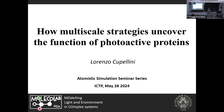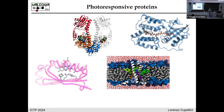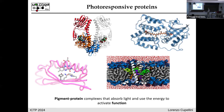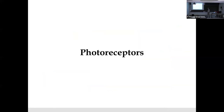Thank you for the introduction. I'm going to talk about photoactive proteins and how we can learn about them with multiscale strategies. Photoresponsive proteins are generally protein complexes with pigments — proteins containing a chromophore that absorbs light and does something. They employ light energy to activate some kind of function. Examples include photoreceptors and light harvesting complexes. I will talk about photoreceptors first and then about light harvesting complexes.